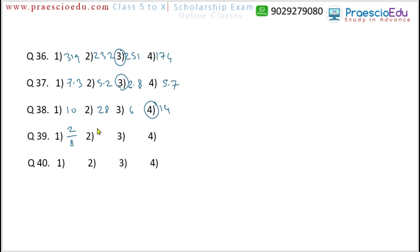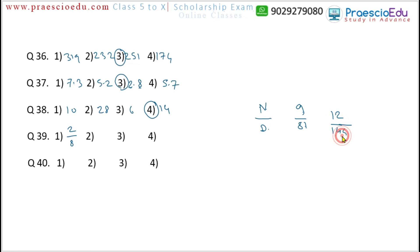Question 39: the relation is that the denominator is the square of the numerator. Option 2: 9/81 — 9²=81 ✓. Option 3: 12/144 — 12²=144 ✓. Option 4: 17/289 — 17²=289 ✓. But option 1: 2/8 — 8 is not the square of 2; it is actually the cube of 2. So option 1 is the different one.